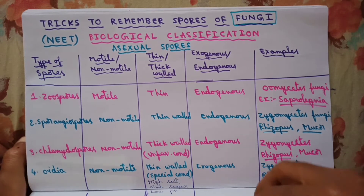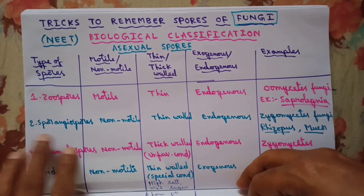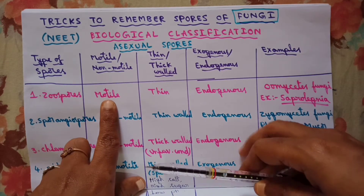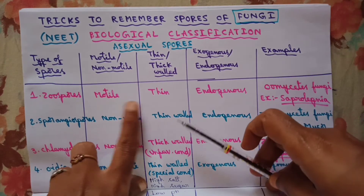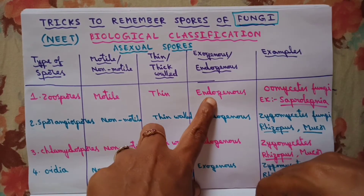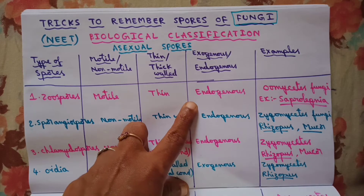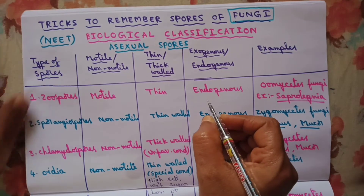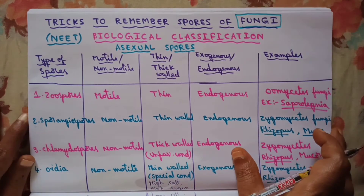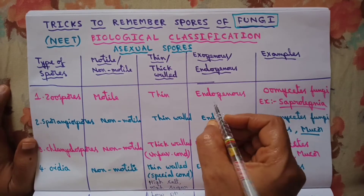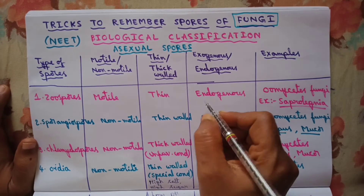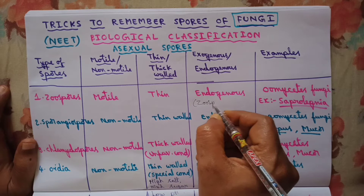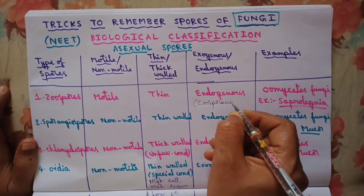The first type of asexual spores are zoospores. These zoospores are motile spores because they are flagellated, and they are thin-walled spores. They are endogenous in origin — endogenous means they are formed inside a special structure. If they are formed outside the mycelium, that is exogenous in origin. Zoospores are formed inside a special structure called the zoosporangium, hence they are endogenous in origin.